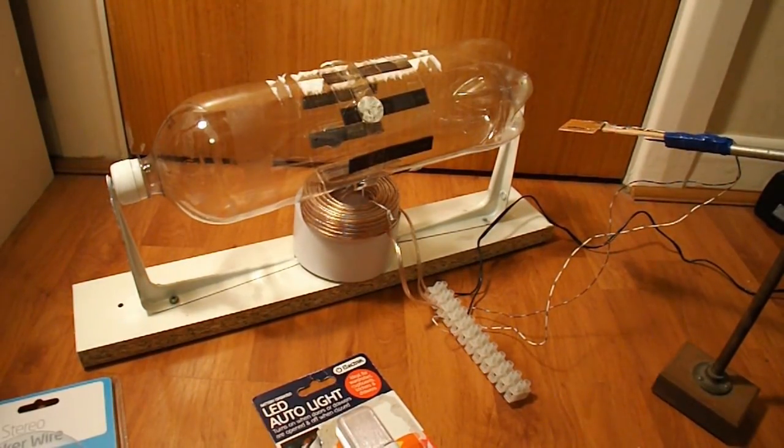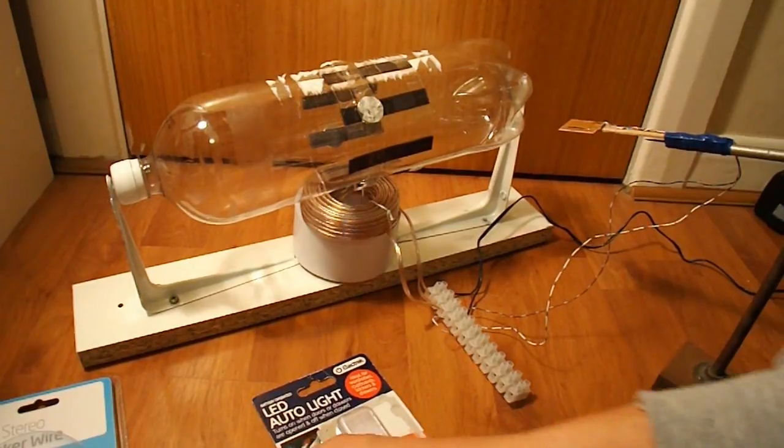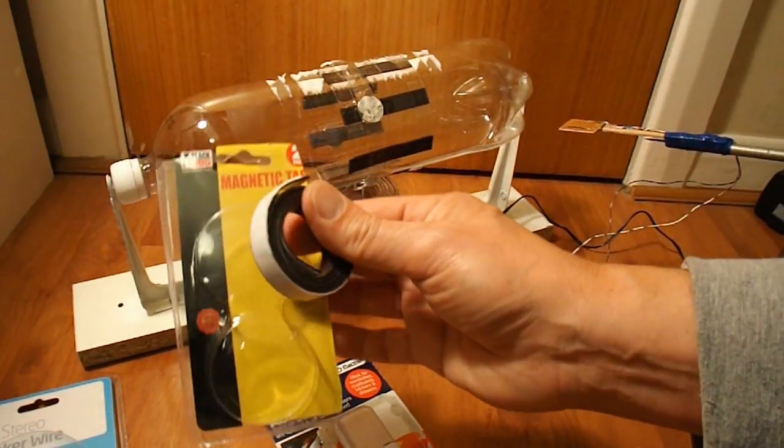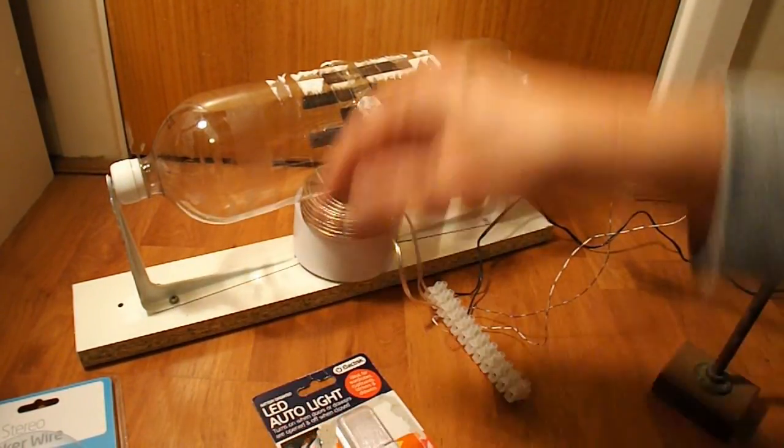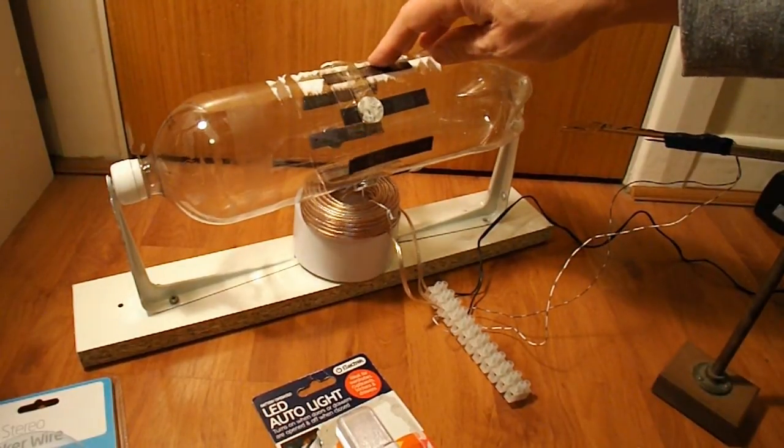OK, summary time. Bargain store project number 20. Didn't quite go as planned. The original idea was to use magnetic tape to make a pulse motor.